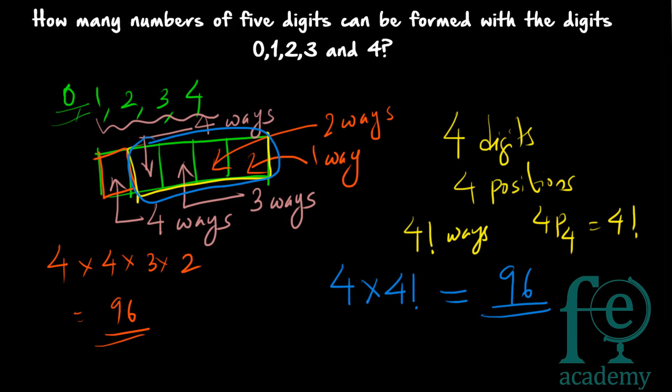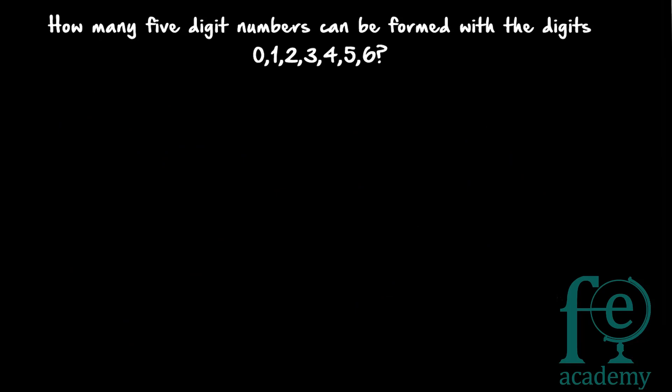Whichever concept is comfortable for you, you can use that for solving these kinds of questions. If you are comfortable with permutations, you can directly use: 10,000th place filled in 4 ways, and remaining 4 digits arranged in 4 positions in 4 factorial ways, giving 4 × 4! = 96 numbers possible.